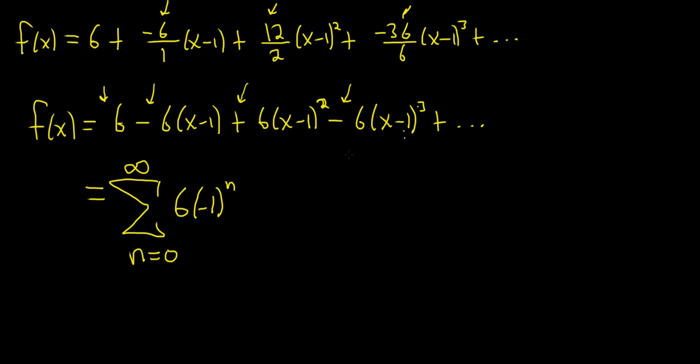And then we have x minus 1 appearing in every term except the first one. But that's okay. We can still write x minus 1 to the n. Because when you plug in 0, you'll get x minus 1 to the 0 and it'll go away. So this should be the correct answer.